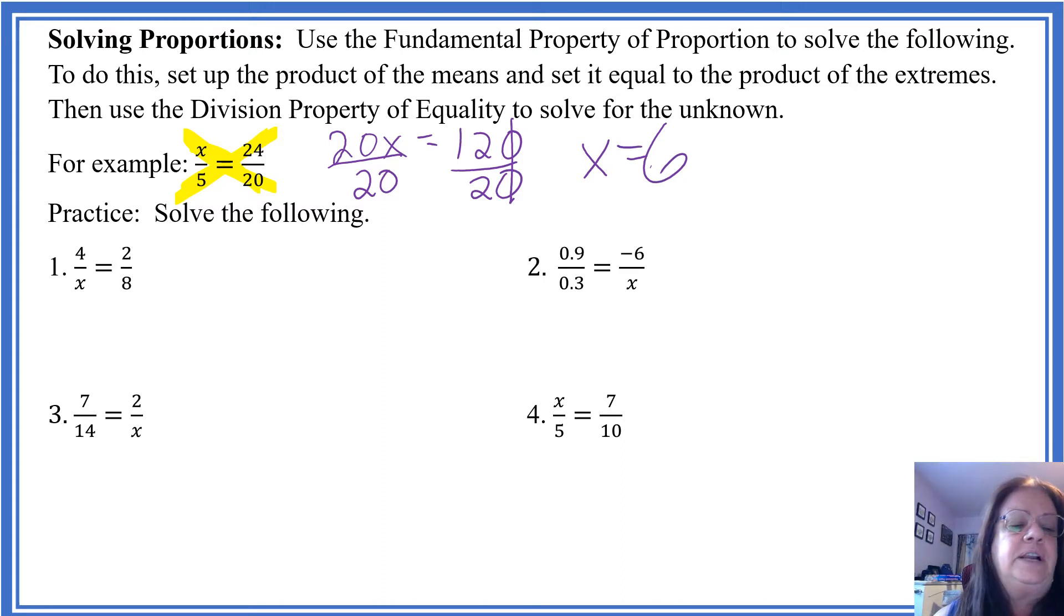Here's some practice problems. So we multiply 4 times 8. Well, let's get the x first. So we have 2x equals 4 times 8 is 32. Divide both sides by the coefficient of the x, which is 2, and I'm going to get x equals half of 32 is 16.